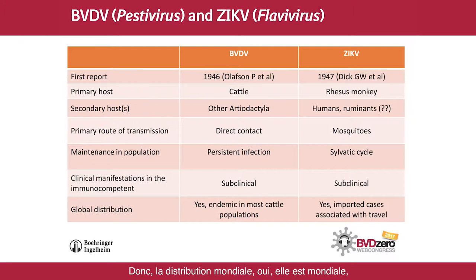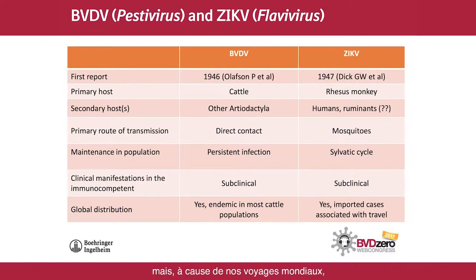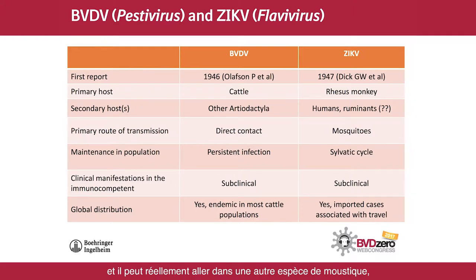Regarding global distribution, BVD virus is endemic in most cattle populations across the world. Zika virus is mainly confined to areas that have the vector, but because of global travel, the virus can get out of those areas and get into other mosquito species that can result in transmission.